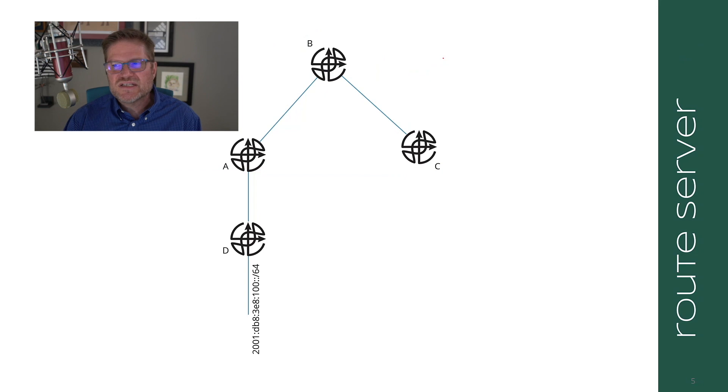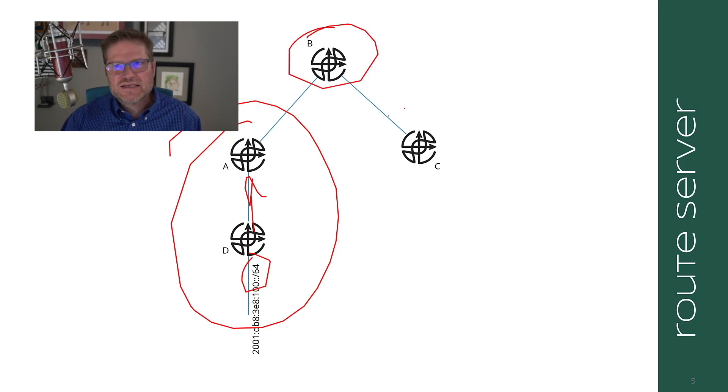Now, another interesting situation is a route server. Now, let's say that A and D are in one AS and 100 colon colon slash 64 is being advertised via IBGP to A or even by IS to IS or some IGP. B is in a separate AS and C is in a separate AS. So let's call this 65,000. Let's call this 65,001 and let's call this 65,002.